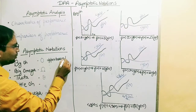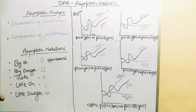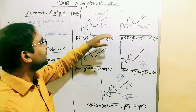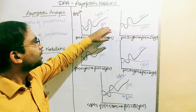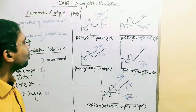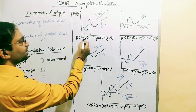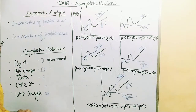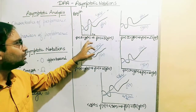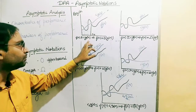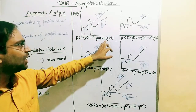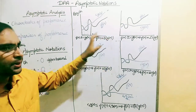Big O gives us the idea of the upper bound — the maximum time taken by the algorithm. There is an initial input size n0, before which all algorithms perform similarly, so we analyze above n0. Above n0, the function is always less than or equal to c·g(n). So Big O is the upper bound, and in notation it is written as f(n) = O(g(n)).